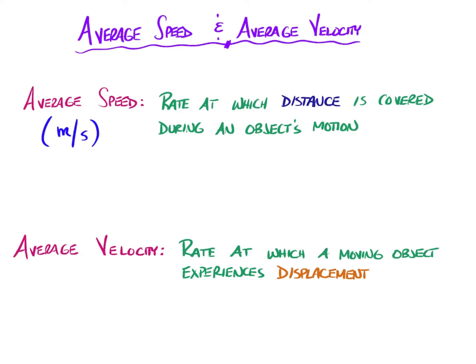It's meters per second, but you need to have direction as well because it's a vector quantity. It's based on displacement, which is a vector and requires direction. Therefore, velocity or average velocity is a vector and requires that direction as well.